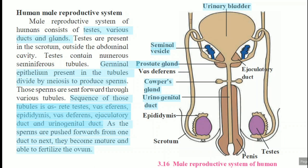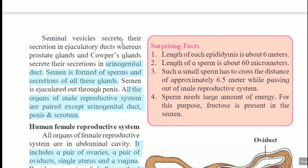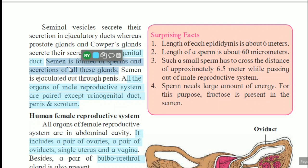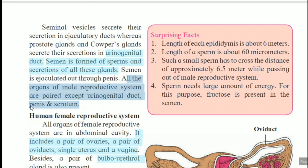The urinary bladder is present here, and above that the kidney structure is visible. The seminal vesicles secrete their secretion into the ejaculatory duct, whereas the prostate gland and Cowper's gland secrete into the urinogenital duct. The combination of sperms and secretion of these glands is called semen. Semen is ejaculated out through the penis, the last part of the male reproductive system. All organs of the male reproductive system are paired except the urinogenital duct, penis, and scrotum.